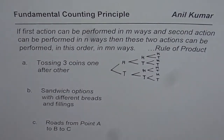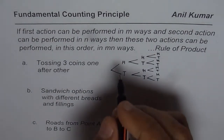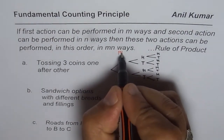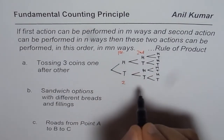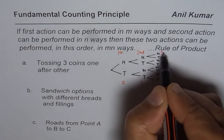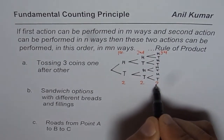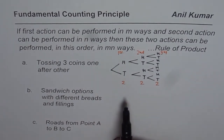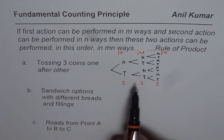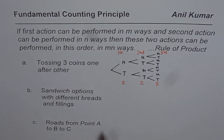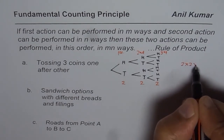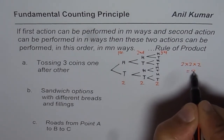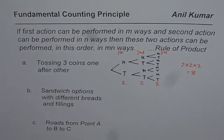What is important to note here is: for the first coin there are two possibilities, for the second coin there are again two possibilities, and for the third coin there are again two possibilities. So how many outcomes do you expect when this action is done one after another? In this particular order, you will get two times two times two — that is eight total number of possibilities.